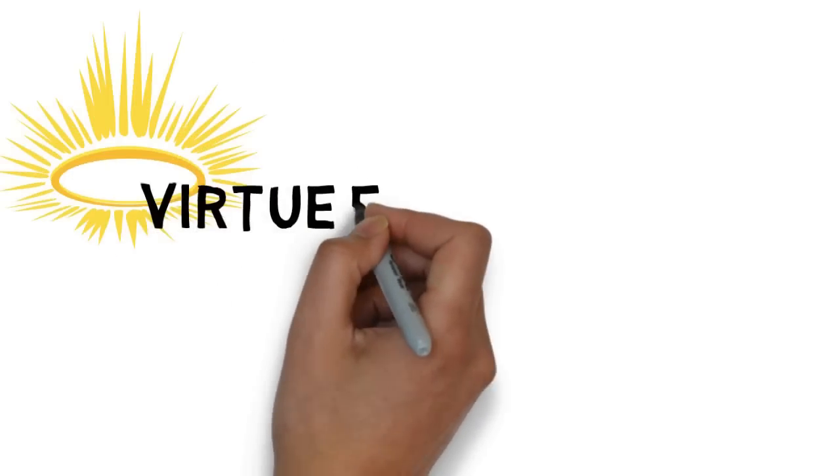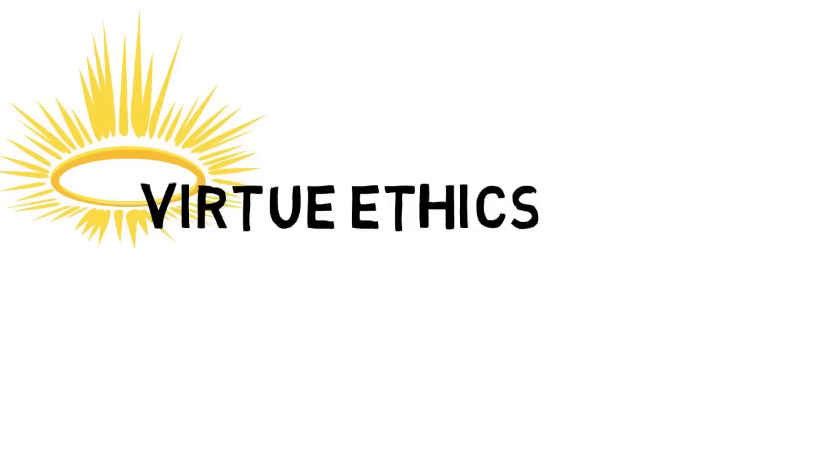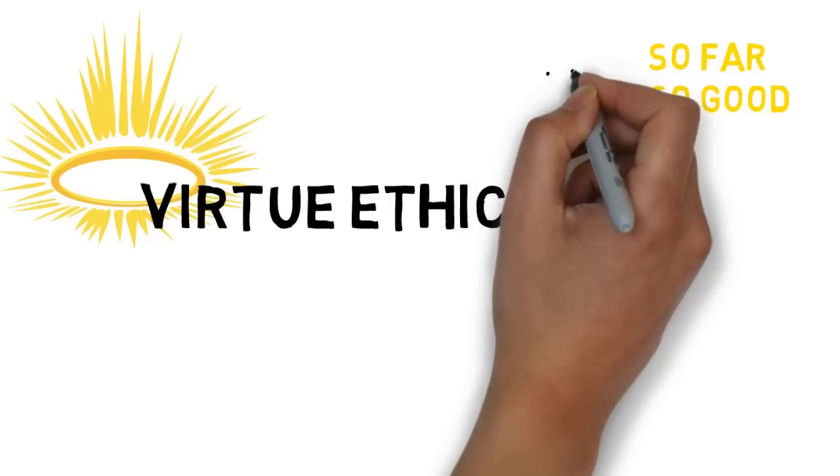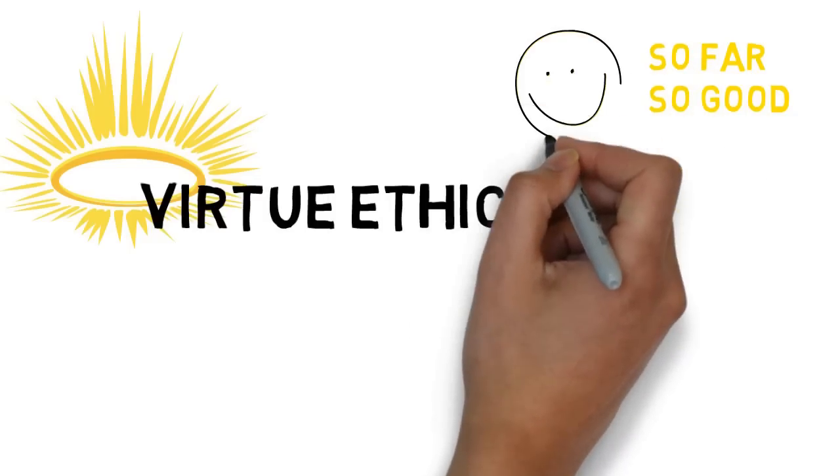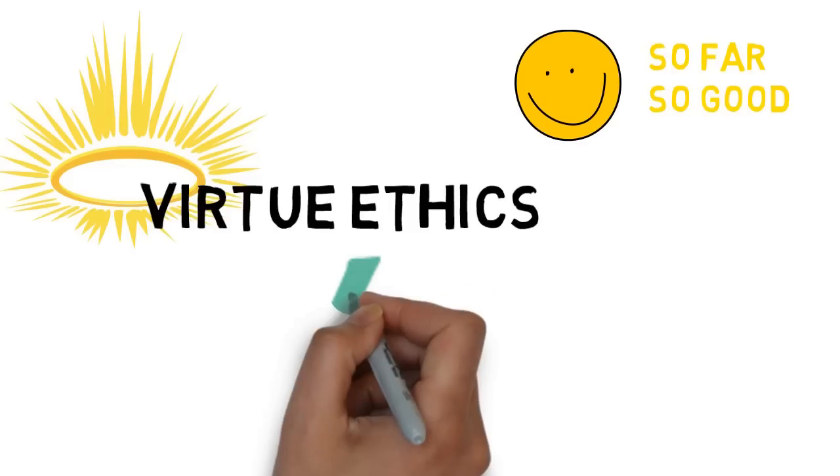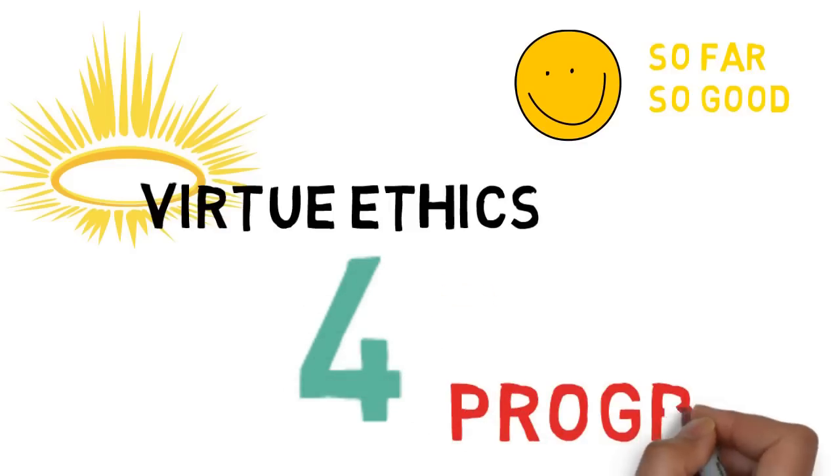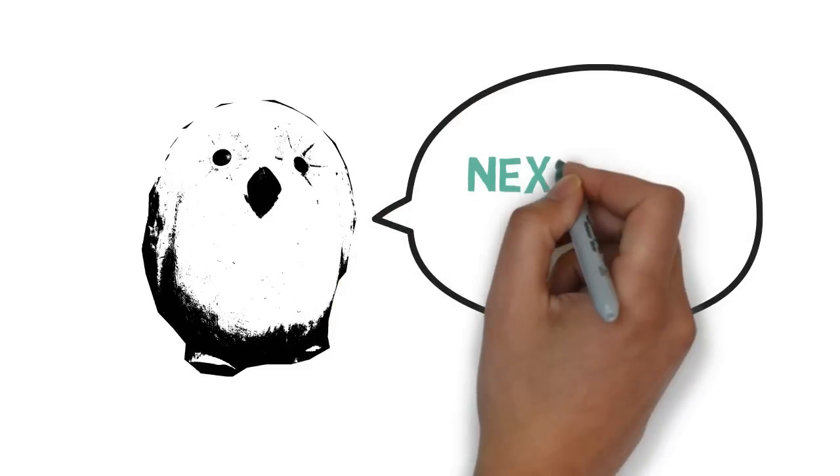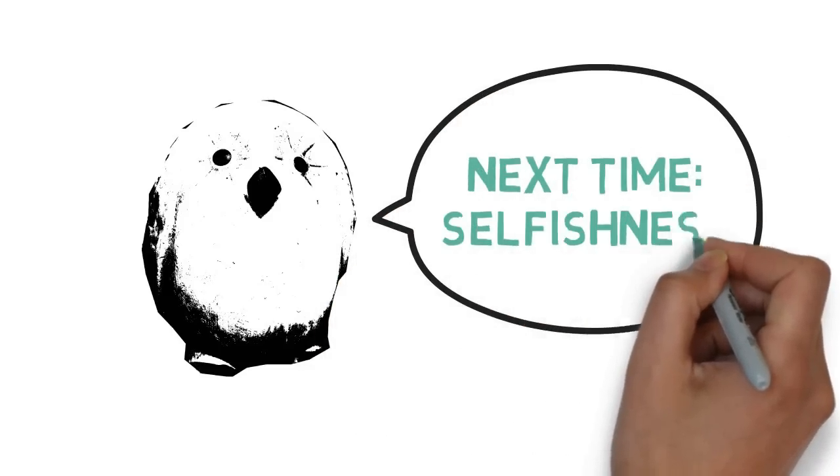In conclusion, then, virtue ethics can, I think, when informed by empiricism and naturalism, respond to the moral luck objection. So there is, as yet, three episodes into our exploration of the criticisms of virtue ethics, nothing contrary to cogent argument in being a virtue ethicist. Which is a good thing, because it is my belief that, despite its reputation for conservatism, progressive politics would benefit from virtue ethics. Which is why, next time, I'll be tackling another objection to it.